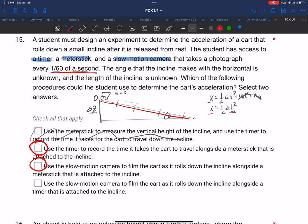We look at the last choice: slow motion camera to film the car as it rolls down the incline along a timer. Well, that's going to give us time and time. We're not going to have the distance. So that one is out. So the second and the third choices.